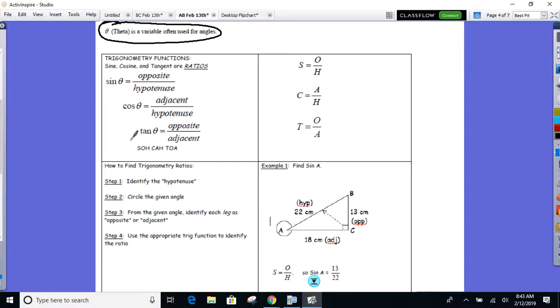Next ratio, COS. That's an abbreviation for cosine, C-O-S-I-N-E, cosine. How do you find that ratio? You take the adjacent side and divide it by the hypotenuse. Third and final ratio.